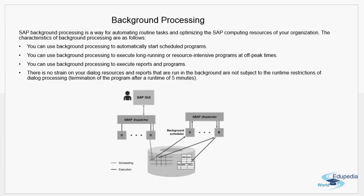The next topic is background processing. SAP background processing is a way of automating routine tasks and optimizing the computing resources of your organization. The characteristics of background processing include: you can automatically start scheduled programs, execute long-running or resource-intensive programs at off-peak times, execute reports and programs with no strain on your dialogue resources, and reports run in background are not subject to the runtime restrictions of dialogue processing.